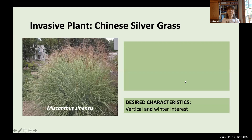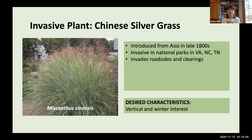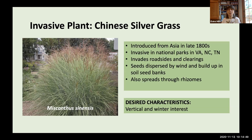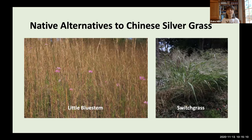Our second invasive grass is Chinese silver grass, Miscanthus sinensis — a very popular ornamental grass introduced from Asia in the late 1800s. It's now invasive in many national parks in Virginia, North Carolina, and Tennessee, and invades roadsides and clearings. Its seeds are dispersed by wind, build up in soil seed banks, it spreads through rhizomes, and has little wildlife value. For ornamental and vertical interest, especially in winter, I suggest little bluestem or switchgrass as native alternatives.